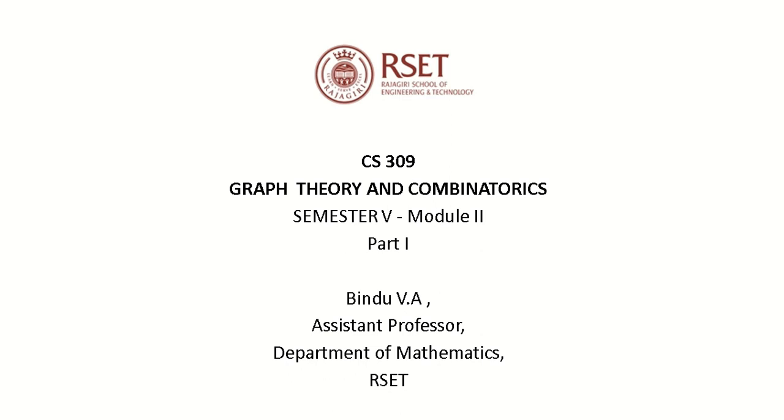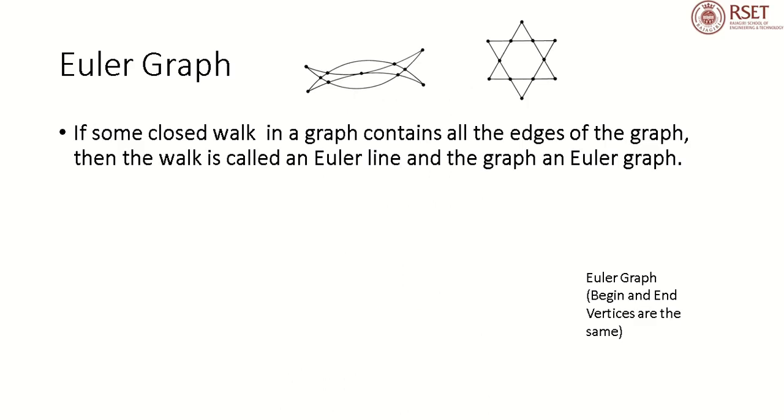In this lecture, I am discussing the topics of Module 2, Part 1. First, we can define an Euler Graph. An Euler Graph is defined as if some closed walk in a graph contains all the edges of the graph, then the walk is called an Euler line and the graph is called an Euler Graph.